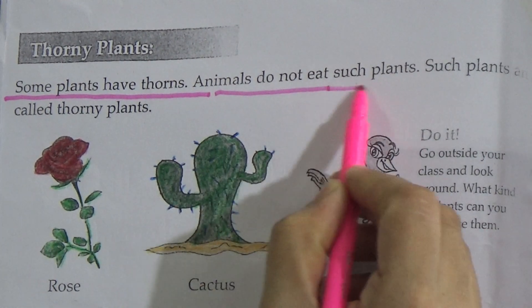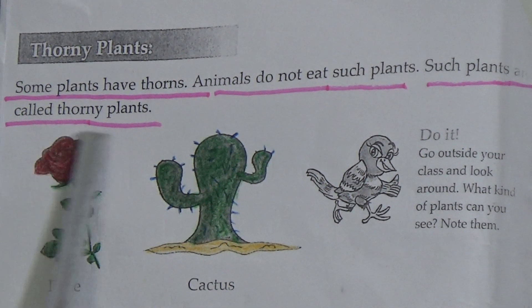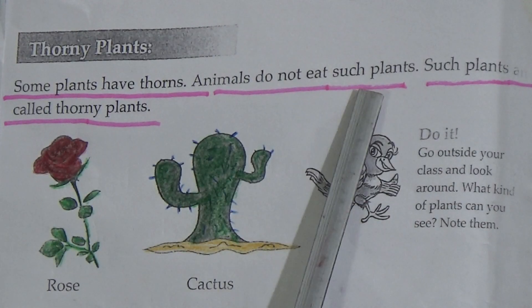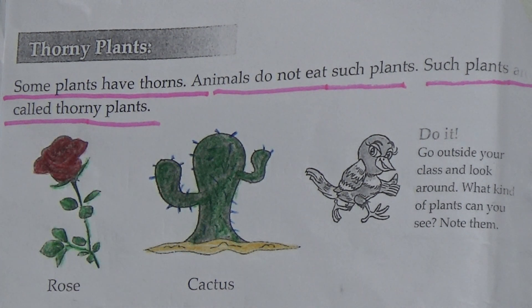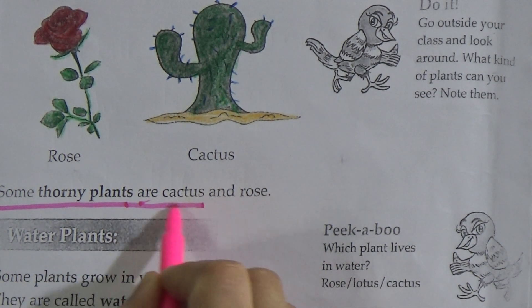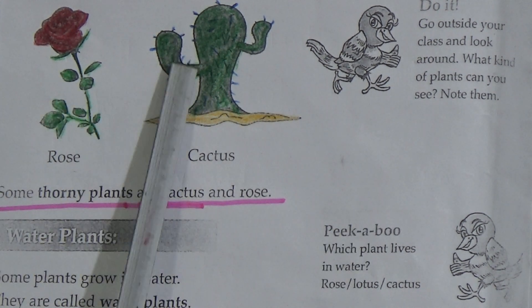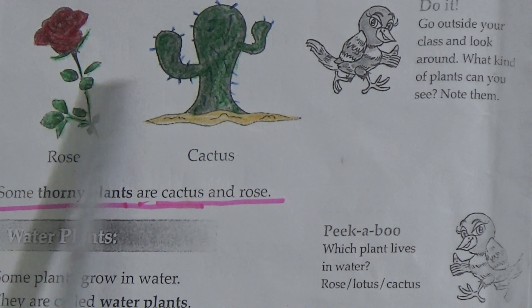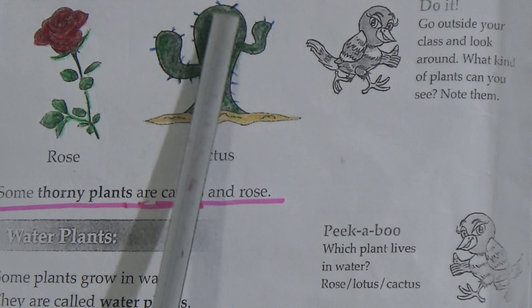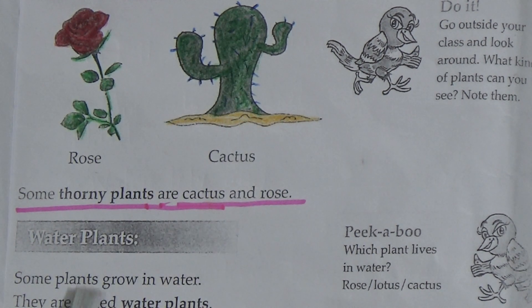Now, thorny plants: some plants have thorns, and animals do not eat such plants. These plants are called thorny plants. Examples of thorny plants are cactus and rose. Underline this line — cactus and rose are the examples of thorny plants. See this figure — here is rose and here is cactus. These plants have thorns, that is why they are called thorny plants.